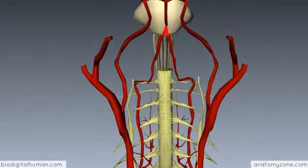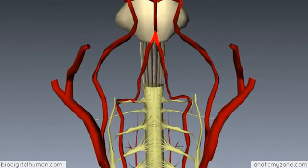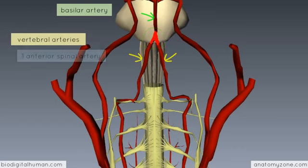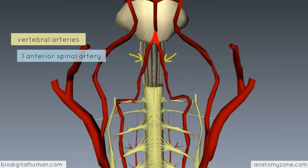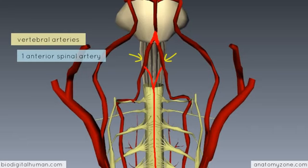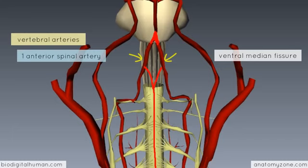After entering the cranial cavity through the foramen magnum, the vertebral arteries anastomose to form the basilar artery. What we're interested in is the vertebral arteries giving off the anterior spinal arteries. You get this anastomosis coming off the vertebral arteries on either side, forming the anterior spinal artery, which runs down the spinal cord its entire length, anterior to the ventral median fissure, or anterior median fissure.